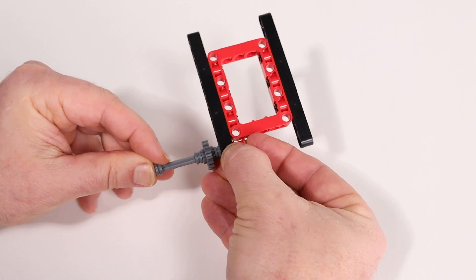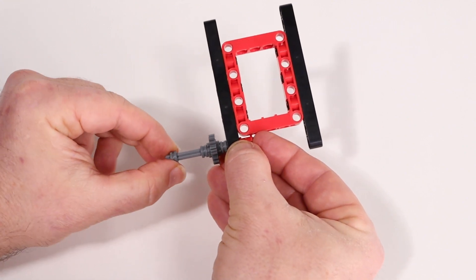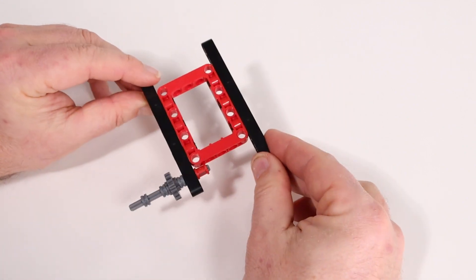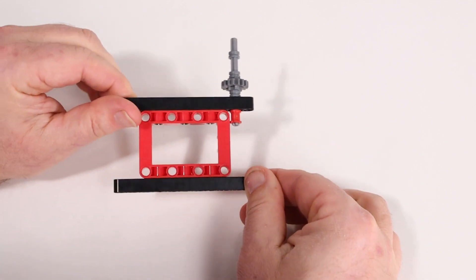Then add one last small bushing. Just slide it on loosely about halfway onto the axle. And this is what the completed single axle looks like.